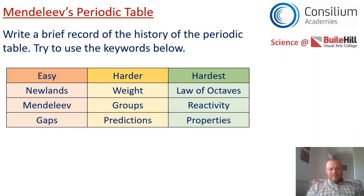How clever is Dmitri Mendeleev! He realized that not all the elements had been discovered, and he laid out the table leaving gaps for those elements. In those gaps, he made predictions about what those elements would be like. A fantastic genius of a man.